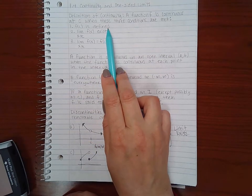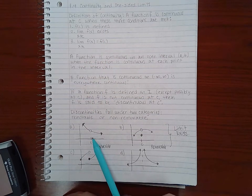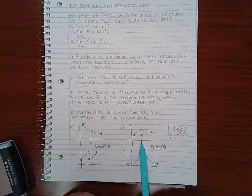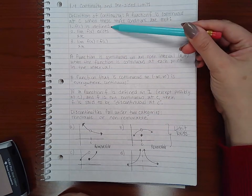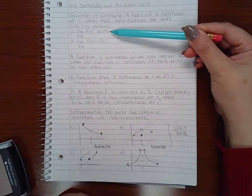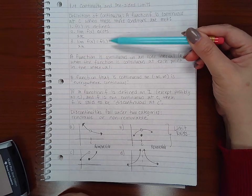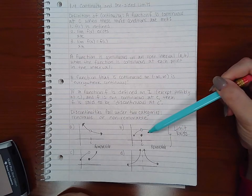part one doesn't, is broken. And for this case, it's part three that is broken. I do have it defined at c, and I do have a limit that exists. They're just not the same for this particular graph.